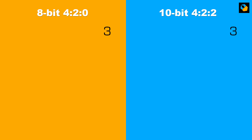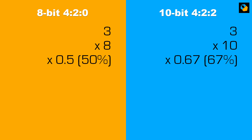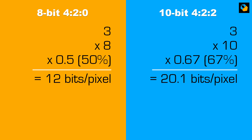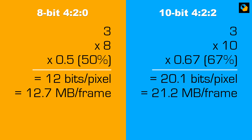Let's start with a simple pixel. Each pixel has three channels — R, G, and B. Then each pixel has a bit depth, which in the case of the GH5 is either 8-bit or 10-bit. Next we have chroma subsampling. Using a simple formula: 4:2:0 gives 50%, while 4:2:2 is about two-thirds or 67%. When you multiply all these numbers, you get the uncompressed size of the pixel in bits. The size of an 8-bit 4:2:0 frame at best is 12.7 MB; for a 10-bit 4:2:2 frame, it's 21.2 MB. You'll find the calculations in the article if you want to follow along.